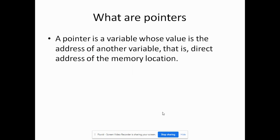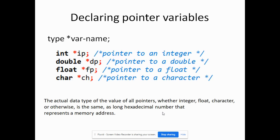What are pointers then? A pointer is a variable whose value is the address of another variable — that is, the direct address of the memory location. We declare pointer variables using this syntax: the data type followed by an asterisk and then the variable name, followed by a semicolon. For example: integer asterisk ip (an integer pointer), double asterisk dp, float asterisk fp, and char asterisk ch. The actual data type of the value of all pointers is the same — it is a long hexadecimal number that represents a memory address.